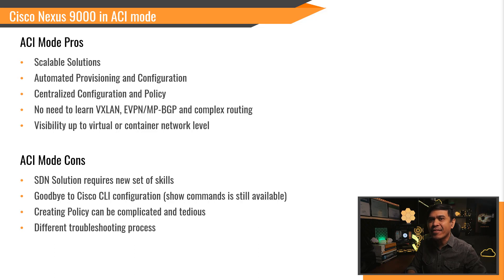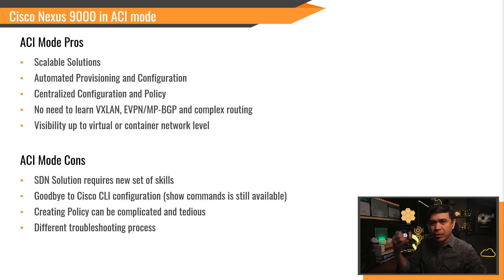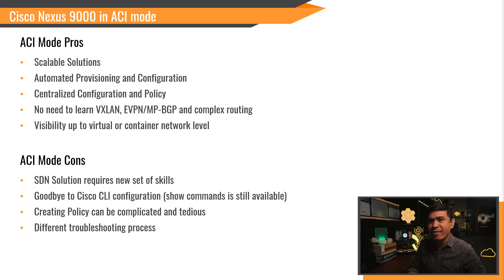With ACI, there is no need to learn advanced technologies such as VXLAN, EVPN, MP-BGP, and complex routing. ACI also provides visibility up to the virtual or container network level — it sees virtual machine and container information. Essentially, ACI solves the disadvantages of traditional CLI-based switching: manual provisioning, lack of scalability, the need for Python scripting, and learning advanced technologies.